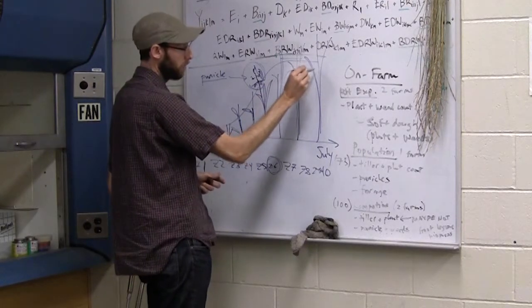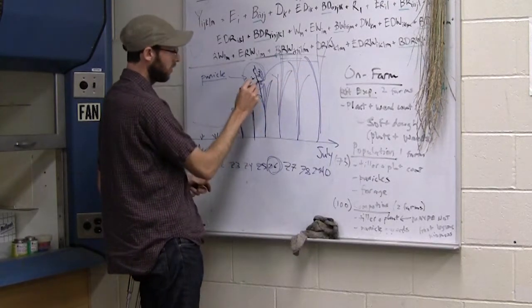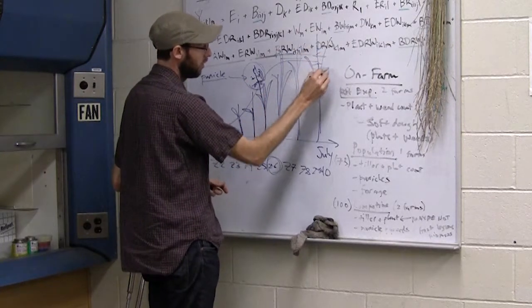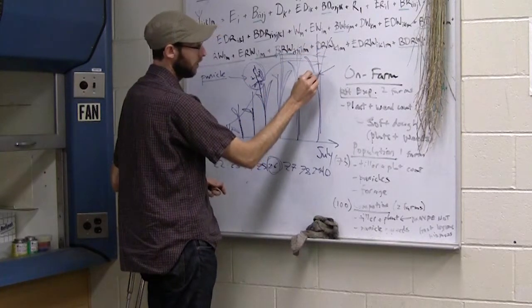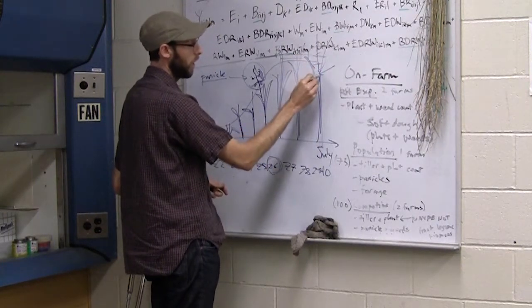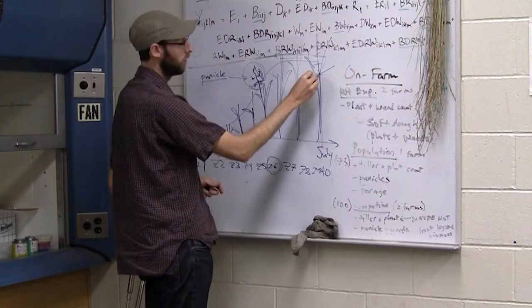So what that means from a plant perspective is that right under the seed head here, so you can see from my crude illustration, this area right here, where the stem begins, that area under the seed head of the panicle is called the peduncle.